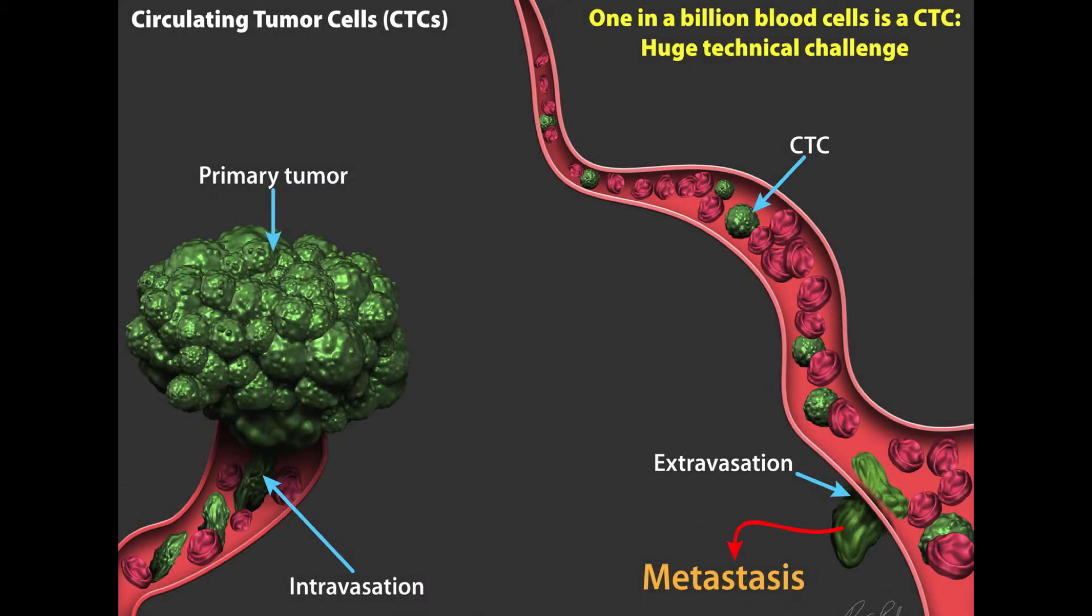It has long been believed that cancer metastasizes when the primary tumor sheds cells into the bloodstream. These transient cells, or circulating tumor cells, are thought to seed tumors in distal locations.